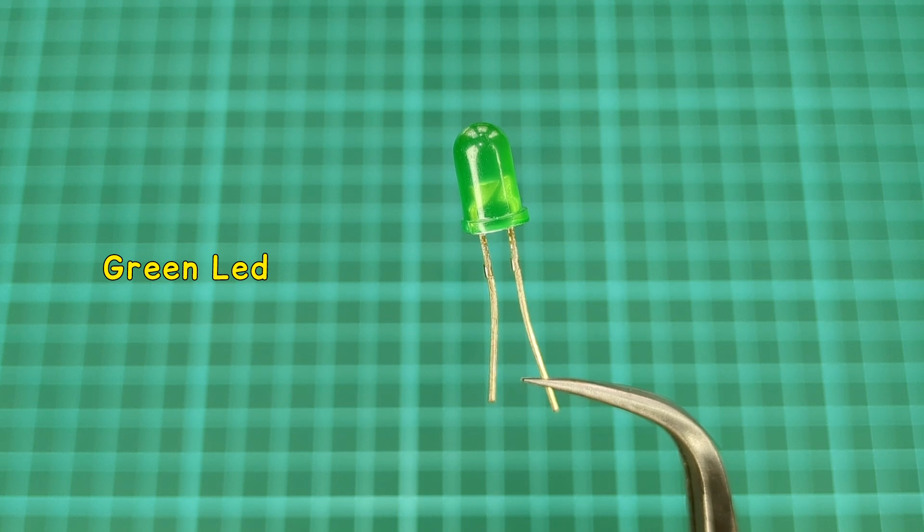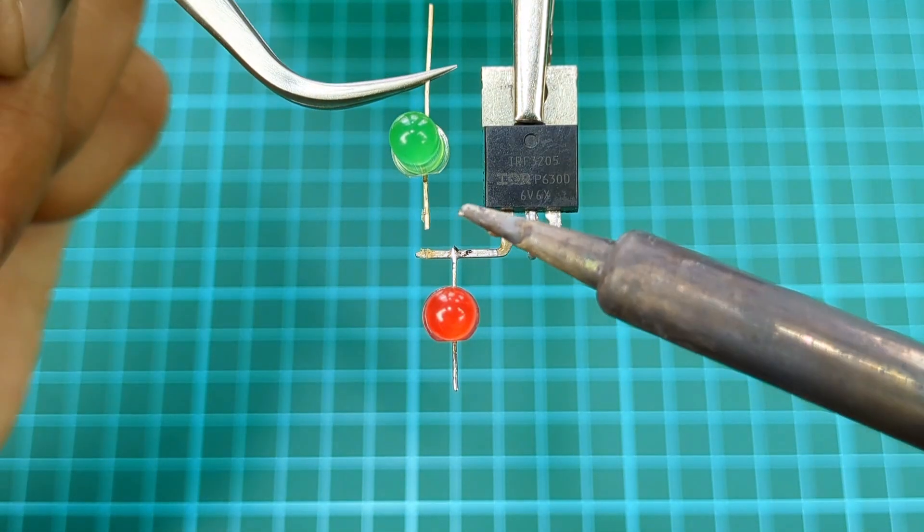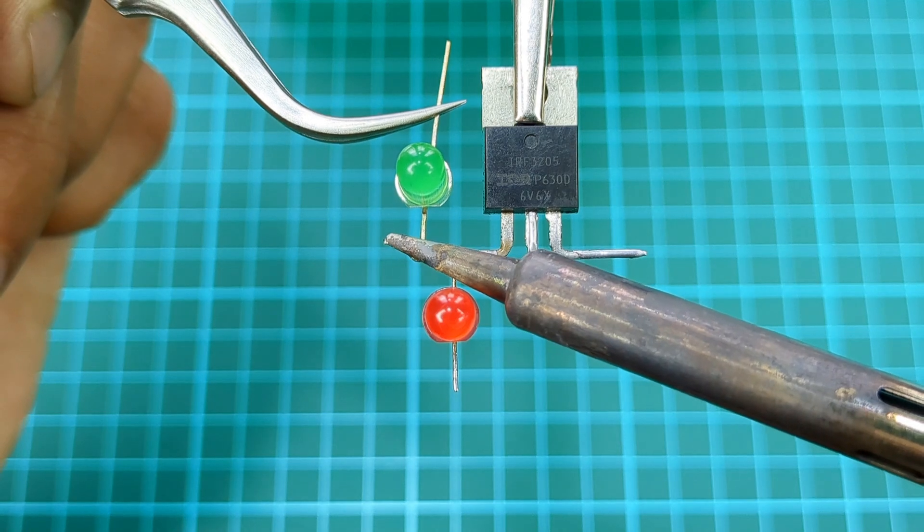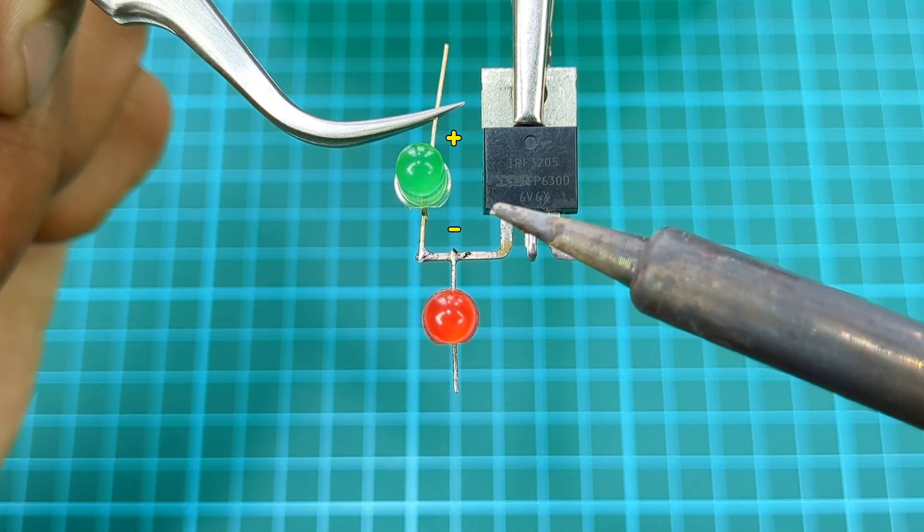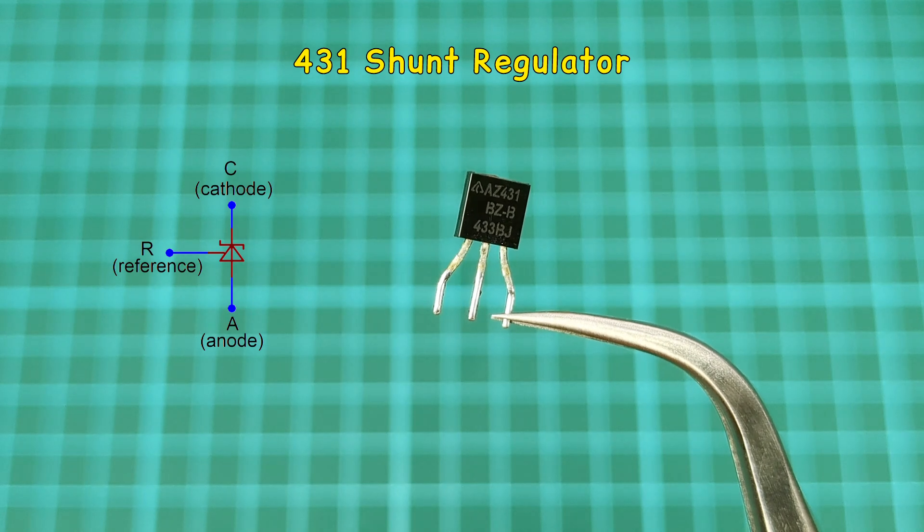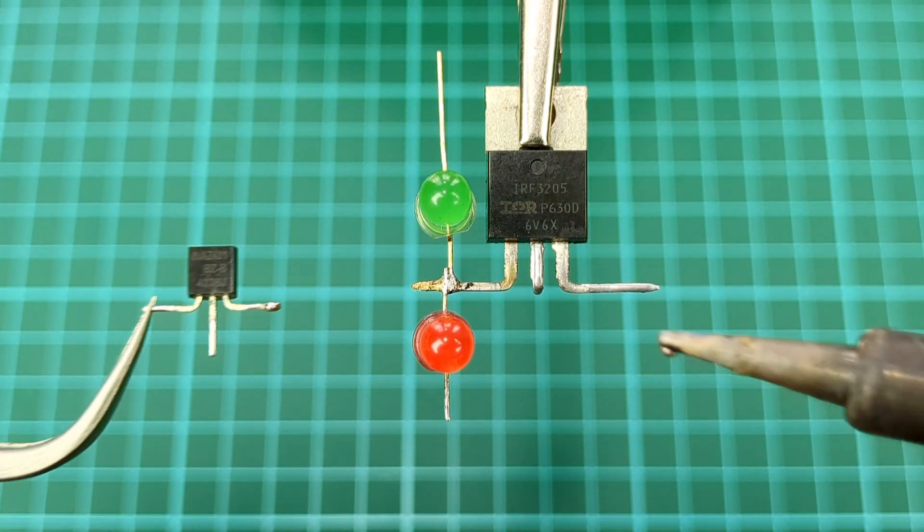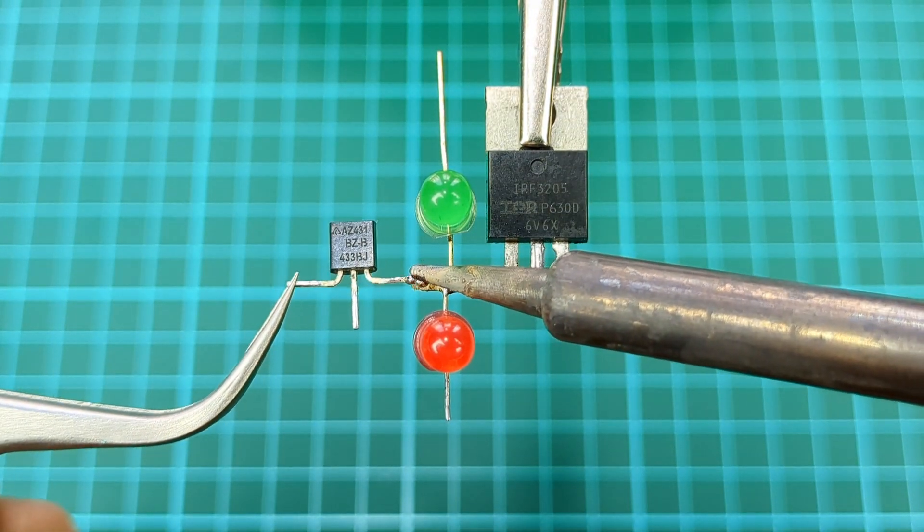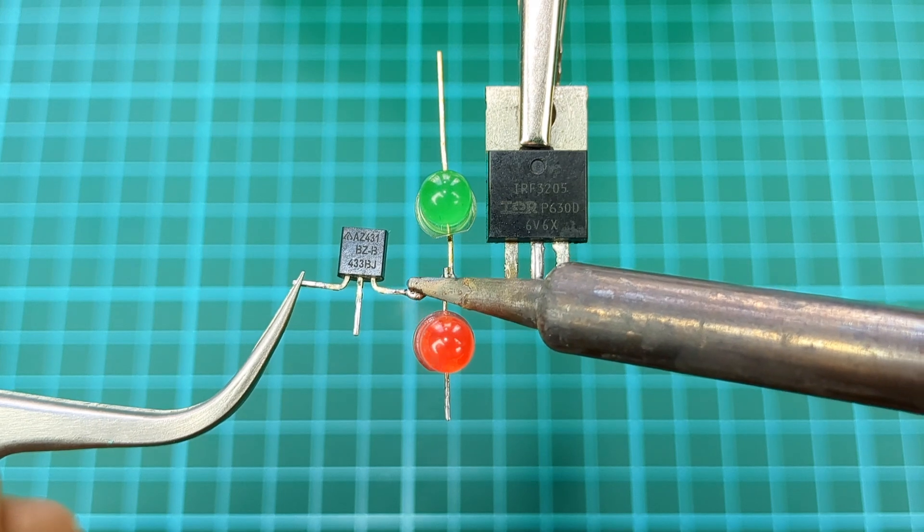Take green LED and connect negative leg to gate pin of the MOSFET. Now take a 431 shunt regulator. Connect third pin of shunt regulator to first pin of MOSFET.